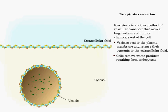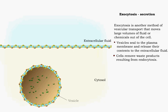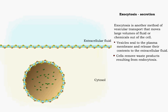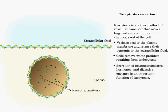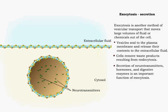Nervous cells release neurotransmitters via exocytosis, and secretory cells secrete important substances like digestive enzymes and hormones.